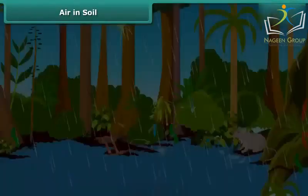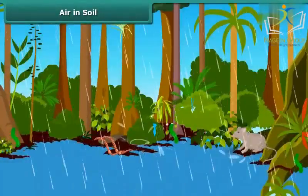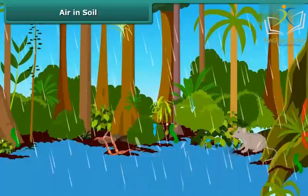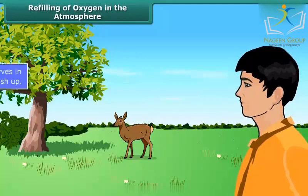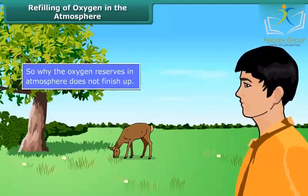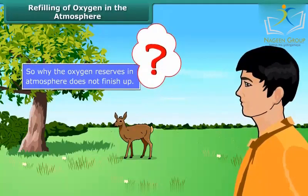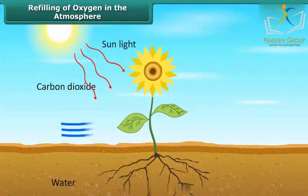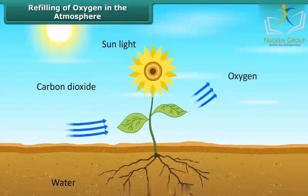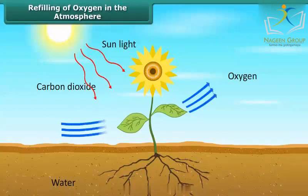The organisms living in burrows and holes of the soil use this trapped air to breathe. During the rainy season, when water fills the burrows and holes, these animals have to come out for respiration. Several billions of humans, animals, and other organisms consume a huge amount of oxygen from the atmosphere every day — so why don't the oxygen reserves finish up? During photosynthesis, plants produce oxygen and release it into the atmosphere. Plants also consume oxygen for respiration, but they produce more than they consume, so plants silently save us.